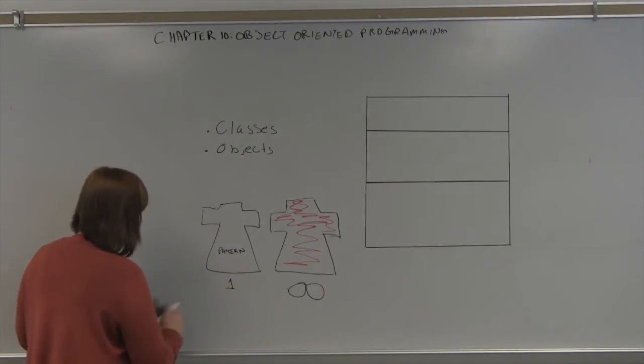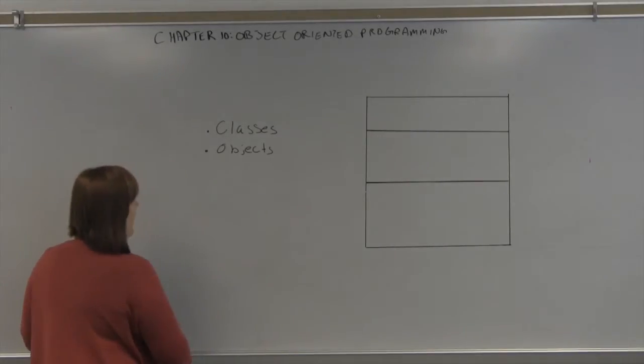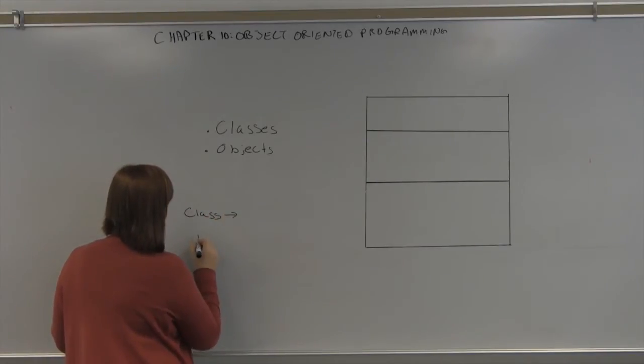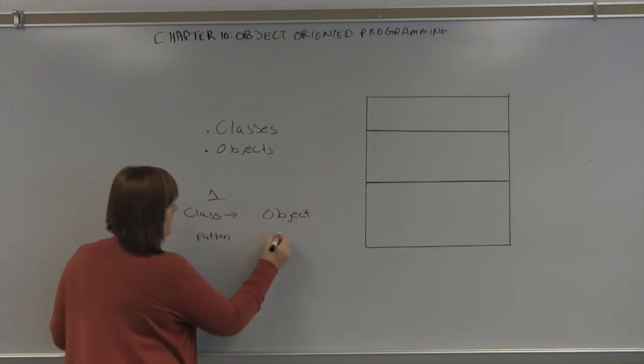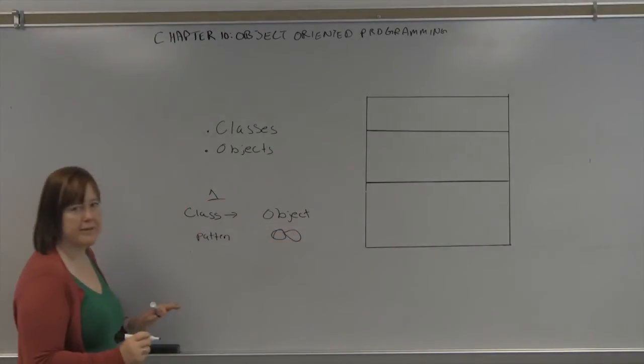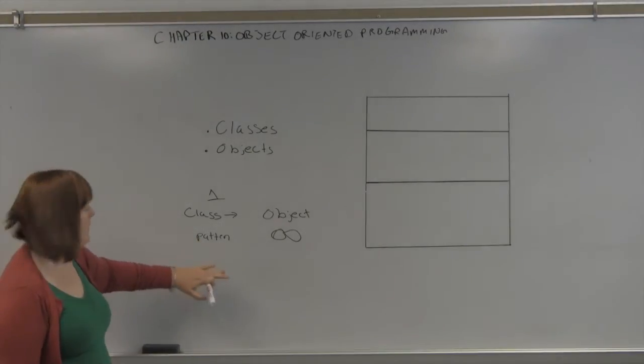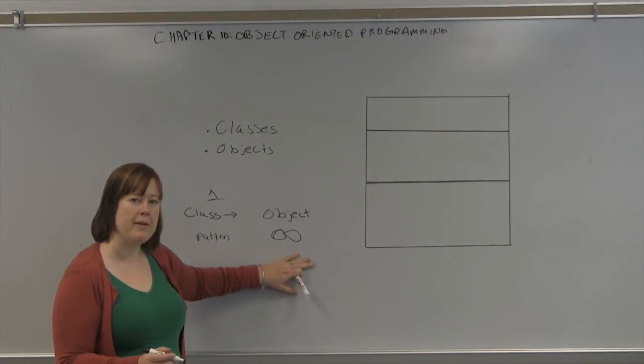This is the way object-oriented programming works. You create a class which is the pattern for an object. And any one class can create an infinite amount of objects. So the class is what we program. The object, we create an instance of it in our program so that we can use it.